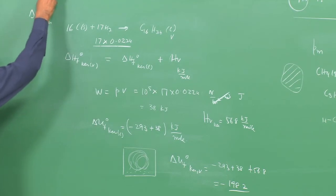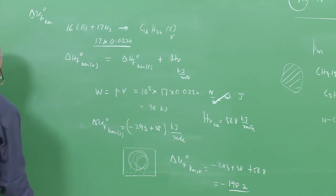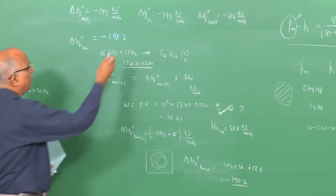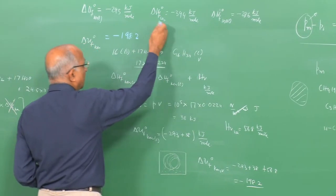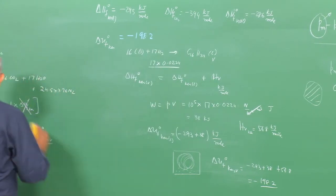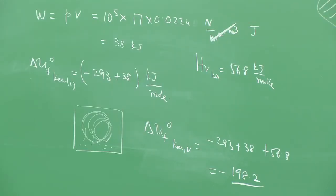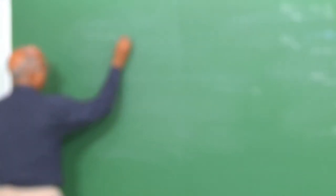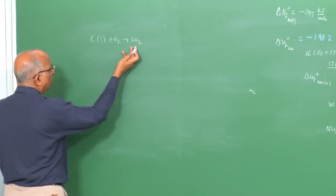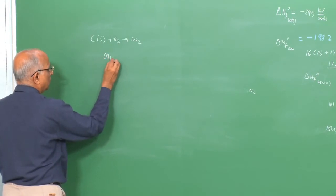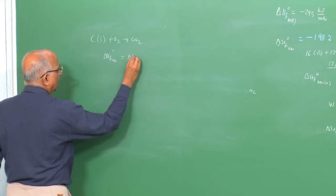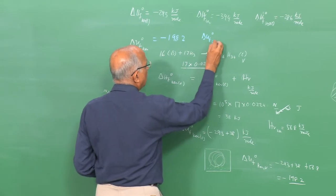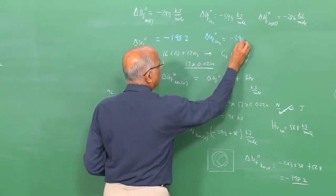For CO₂: the formation equation is C(s) + O₂(g) → CO₂(g). One mole of O₂ gives one mole of CO₂ — no net change in moles of gas, no volume change. Therefore, the internal energy of formation of CO₂ equals its enthalpy of formation: ΔU°_f (CO₂) = −394 kJ/mol.